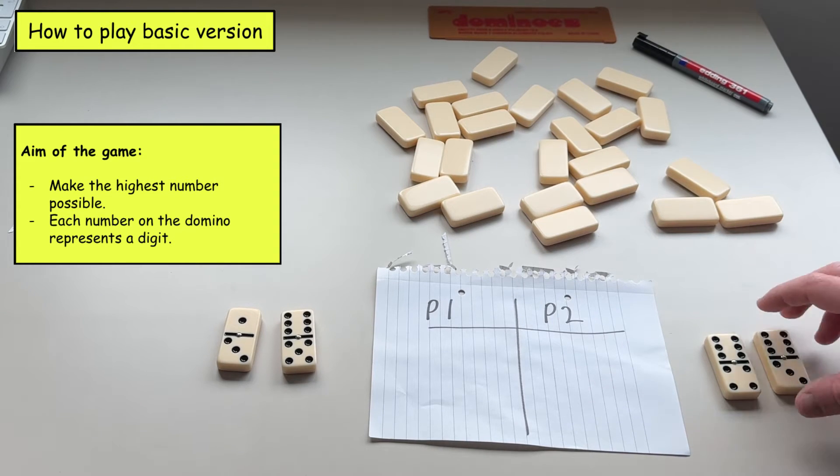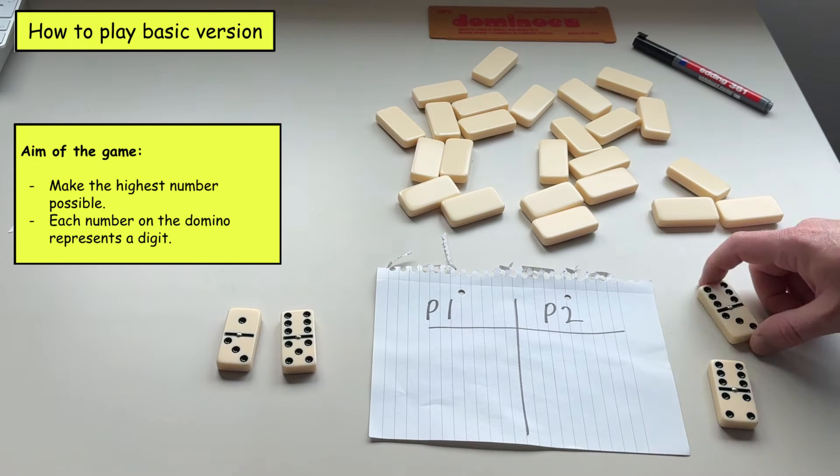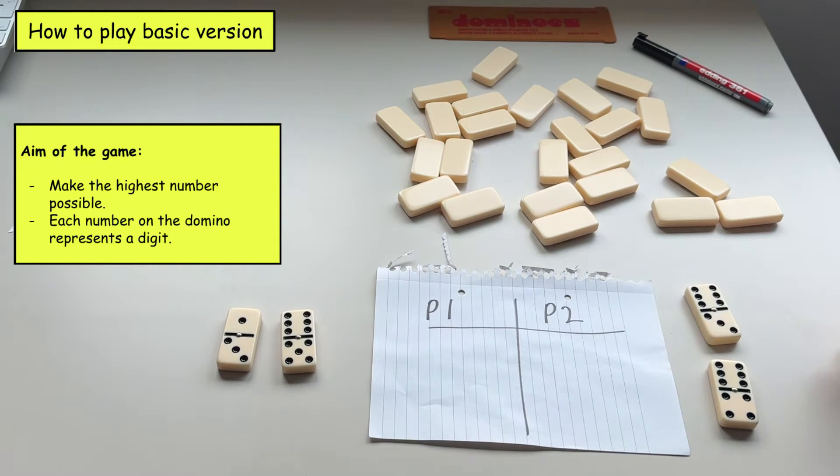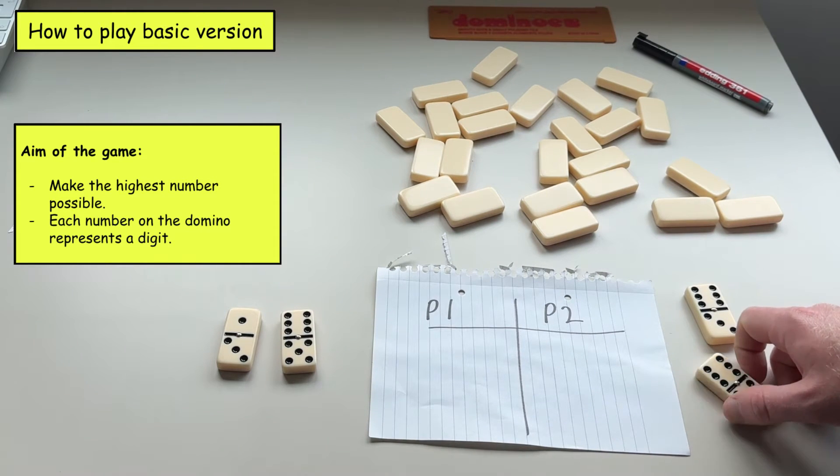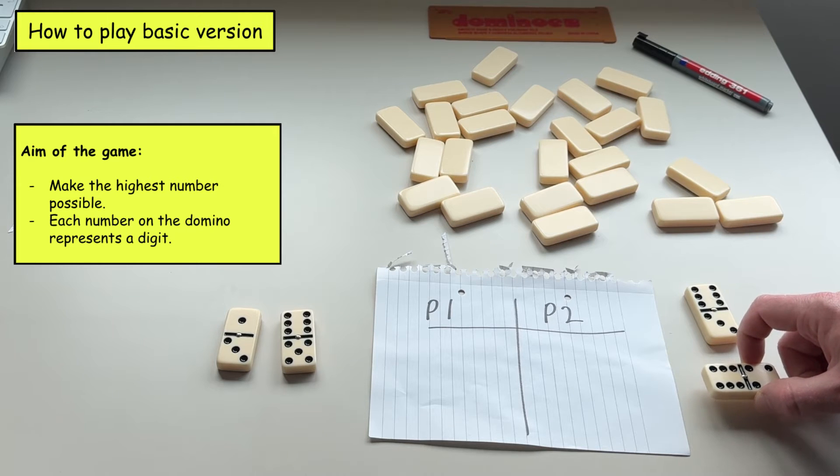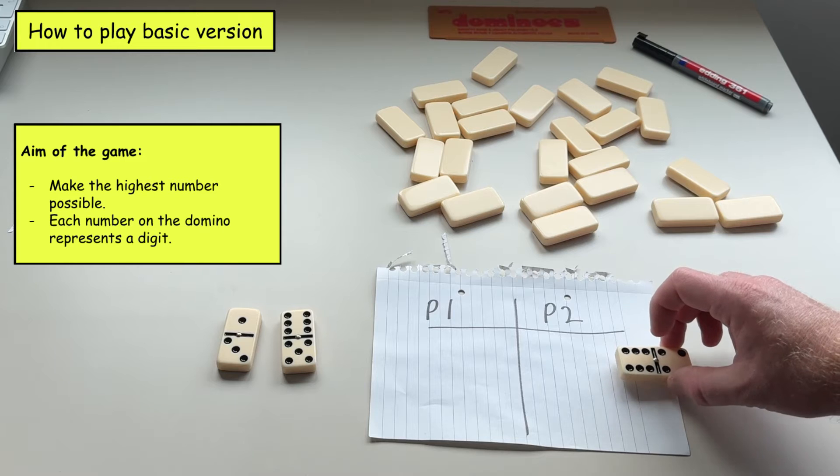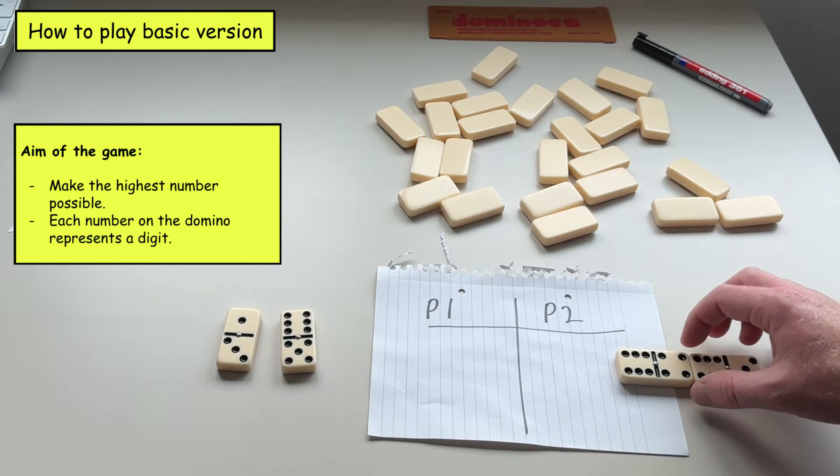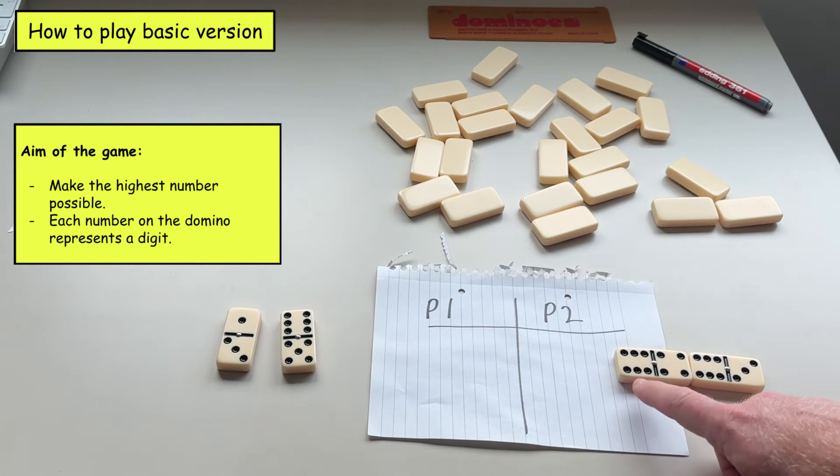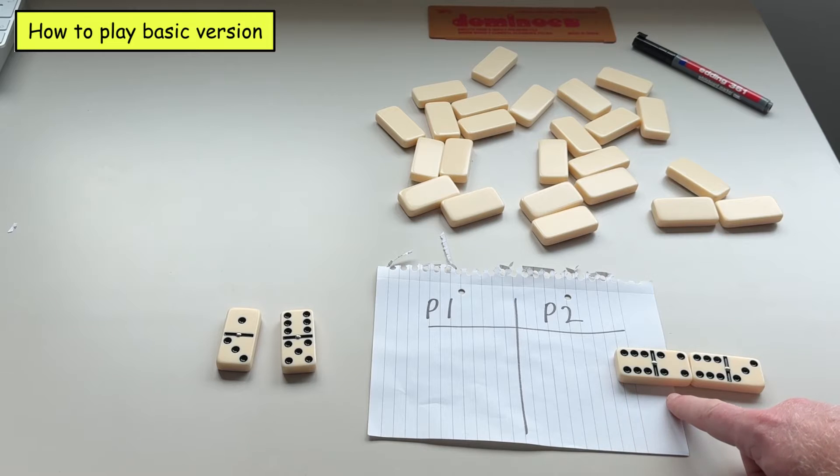Now the aim of the game is to make the highest number that you can. So player two here has got a four and a six and a three and a six. Now what they need to do is they need to figure out the highest number that they can. So if I put these two dominoes together like this it would give me my highest number. So it would be six thousand four hundred and sixty three.